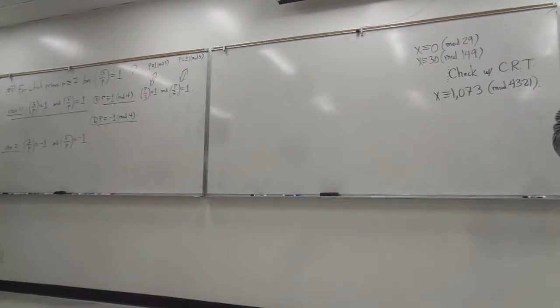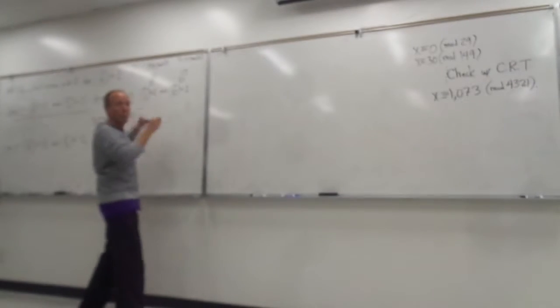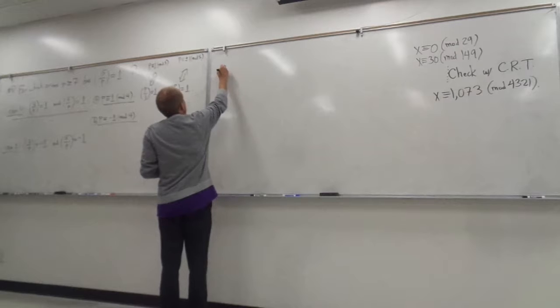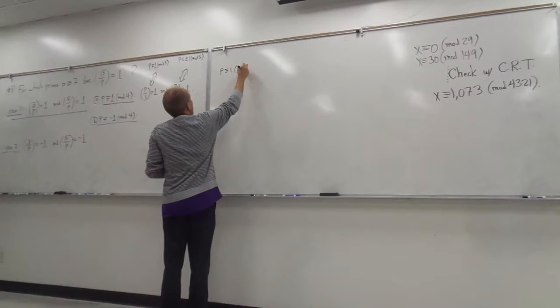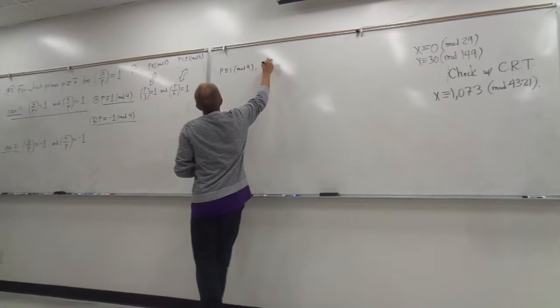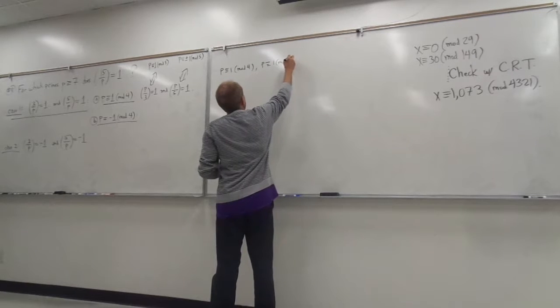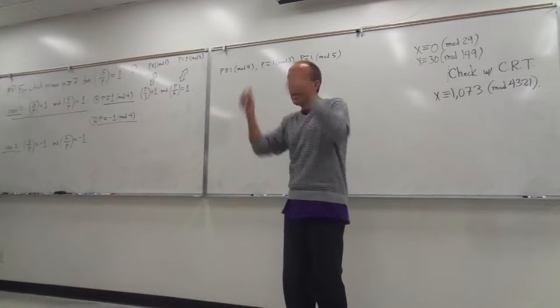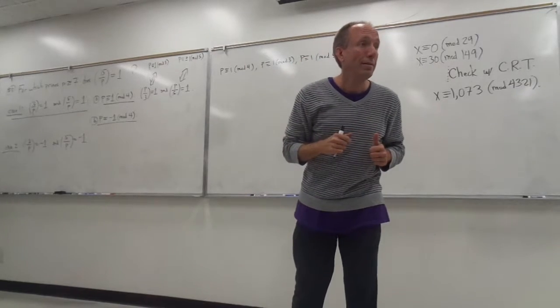Is everybody following this? So what you have to have, one case where you win, right, would be p is congruent to 1 mod 4, p is congruent to 1 mod 3, and p is congruent to 1 mod 5. In that case, you win, right?